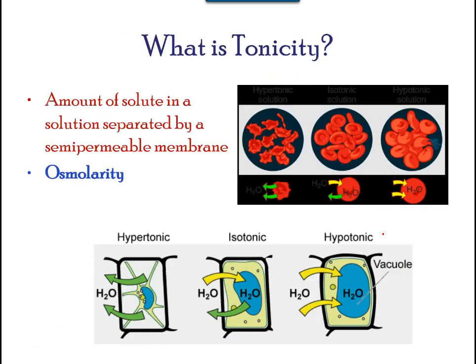Tonicity describes the amount of solute in a solution. The measure of the tonicity of a solution, or the total amount of solutes dissolved in a specific amount of solution, is called its osmolarity. Three terms — hypotonic, isotonic, and hypertonic — are used to relate the osmolarity of a cell to the osmolarity of the extracellular fluid that contains the cell.